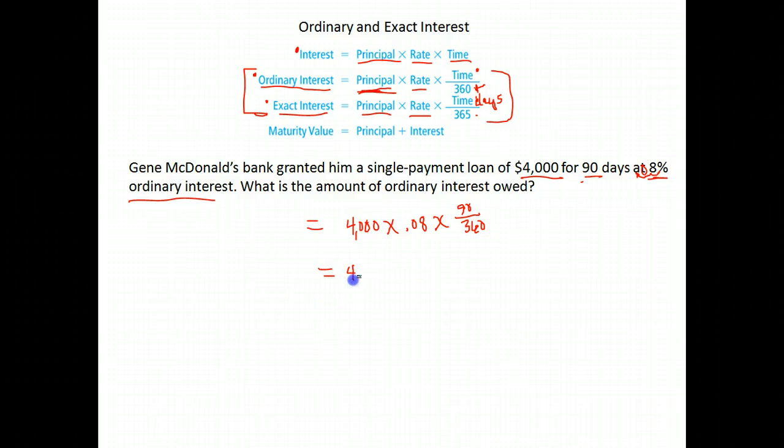So we just go ahead and calculate that. If you're kind of shy of fractions, what you can do is multiply 4,000 times 0.08 times 90, and then divided by 360. The fraction 90 over 360 is 90 divided by 360. When I do that, I get an answer of $80. So the amount of interest that would be owed on this count is $80.